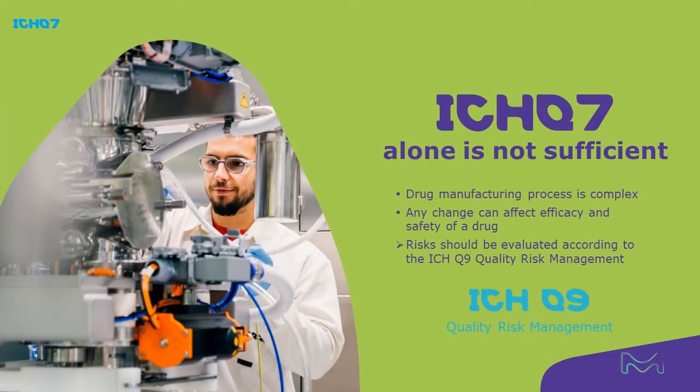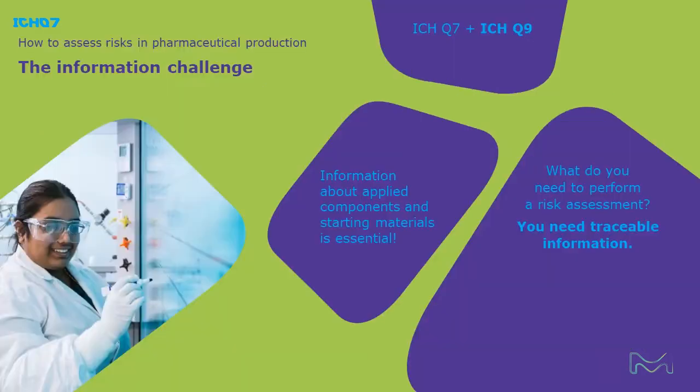As the pharmaceutical manufacturing process is complex, it may bear a lot of risks. Therefore, another guideline — the ICH Q9 Quality Risk Assessment — is an established standard on how to detect and mitigate risk of pharmaceutical production.